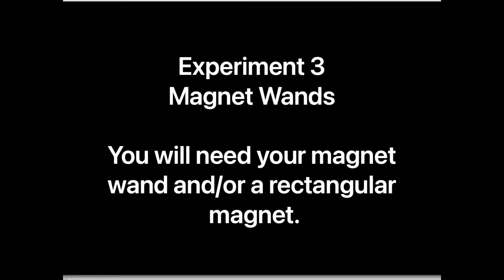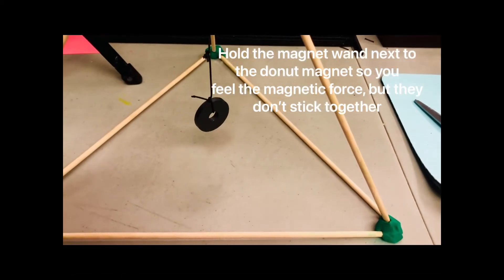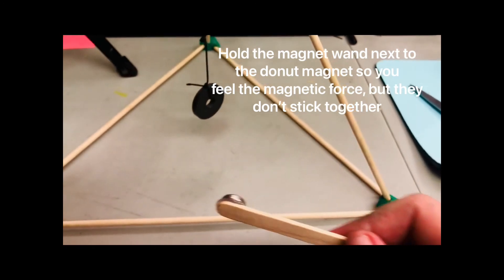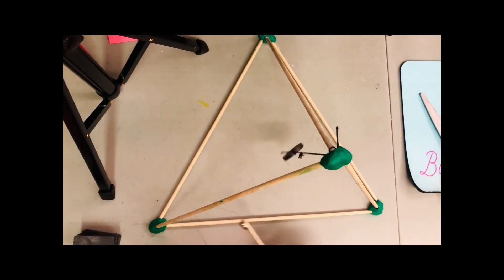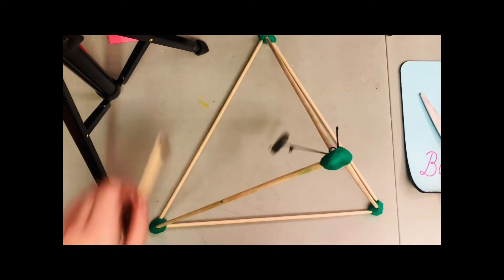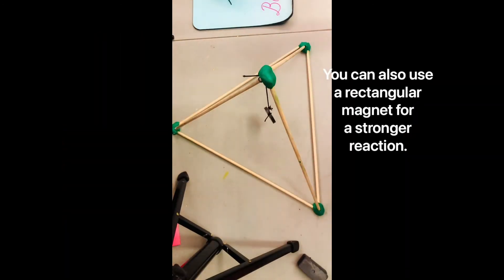Here's what you will need for our third experiment. Hold the magnetic wand near the donut magnet so you feel that magnetic force but so they also don't attach, and move your wand around and watch how you can control the magnet. Try this with your rectangular magnet for a stronger reaction.